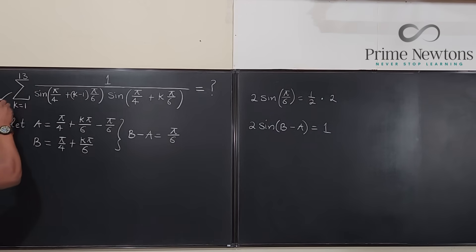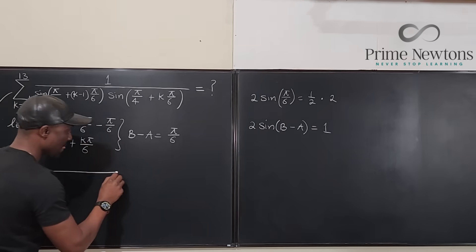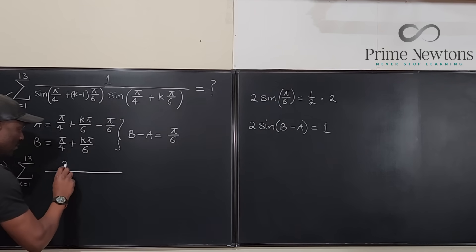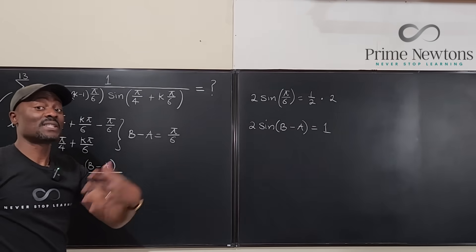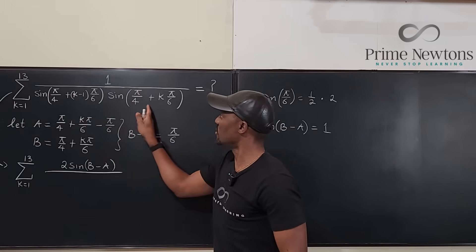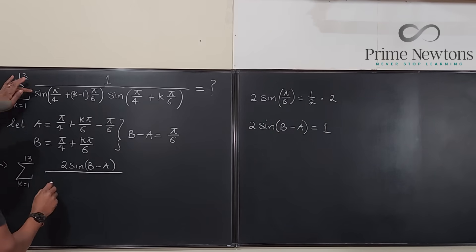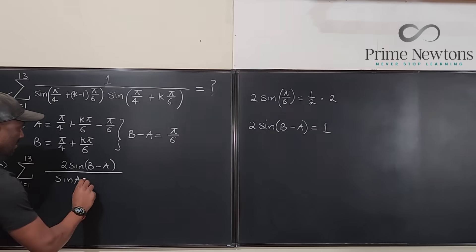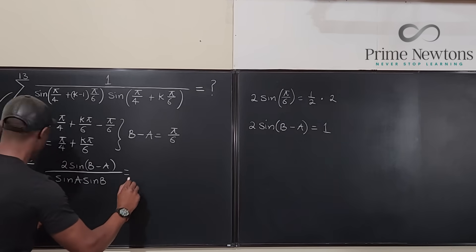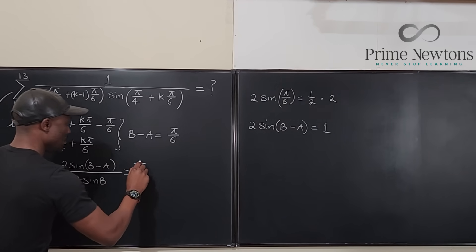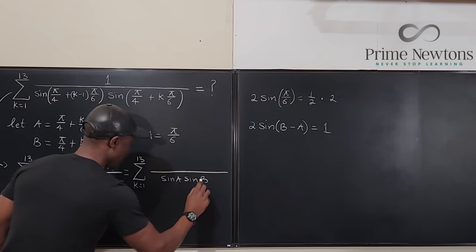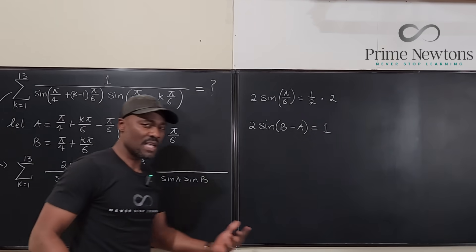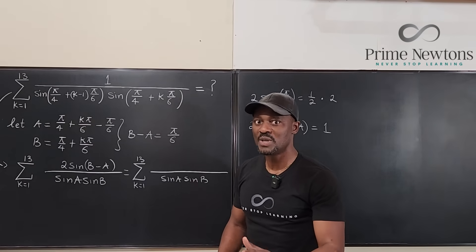Going back, the sum from k = 1 to 13 becomes: instead of writing 1 in the numerator, I write 2·sin(b − a), all over sin(a)·sin(b). The reason I do this is because it's easier to work with trig in addition form than multiplication, especially in a denominator. Now, expanding sin(b − a) using the angle subtraction formula: sin(b − a) = sin(b)cos(a) − cos(b)sin(a).